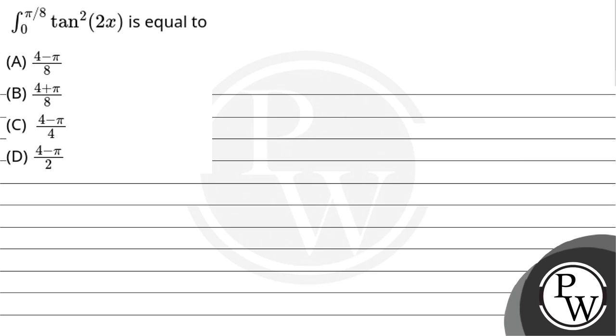Let's read the question: integration of tan square 2x, limit 0 to pi by 8, is equal to. So here our key concept is one of the trigonometric identities.